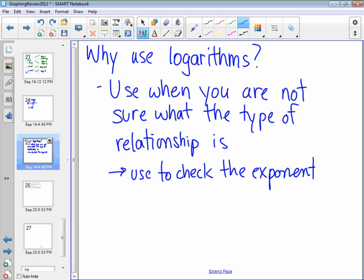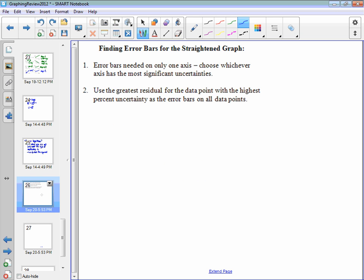The first step is to find error bars for the straightened graph. It's not hard to get the line of best fit, to take the logarithm of all the data points, the x's and the y's, and plot those data. Once you've plotted that data, you need error bars. So right here, error bars needed on only one axis, obviously the one which has the most significant uncertainties. You have to use the greatest residual for the data point with the highest percentage of uncertainty as the error bar on all data points, once you've chosen which one is most significant, which set of error bars is most significant.